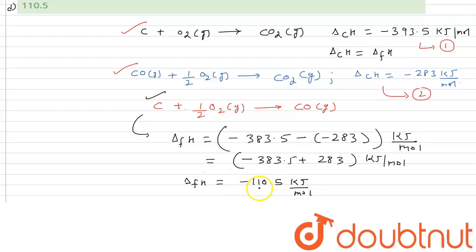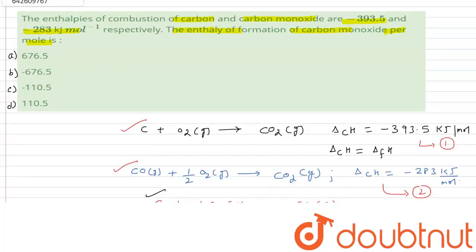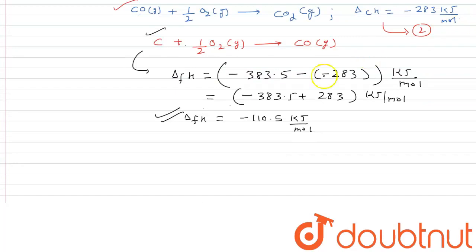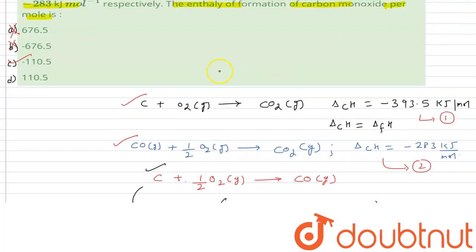Let's check the options. Option A (676.5) is not correct. Option B (minus 676.5) is also not correct. Option C is minus 110.5, which matches our calculated value — this is the correct answer. Option D gives a positive value, but we obtained a negative value, so Option D is also wrong. Therefore, Option C is the correct answer.